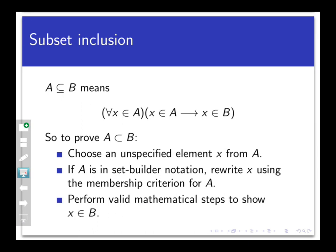When I say that A is a subset of B, what it means is that every element of A is also an element of B. In logical language, this would say: for every X that belongs to A, if X is in A, then X is in B. This is really an if-then statement, and that's how we're going to think about proving subset inclusion.